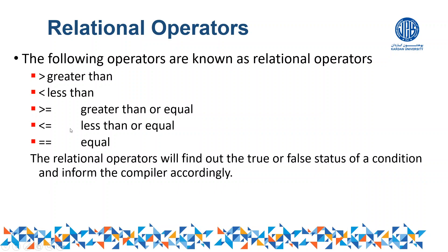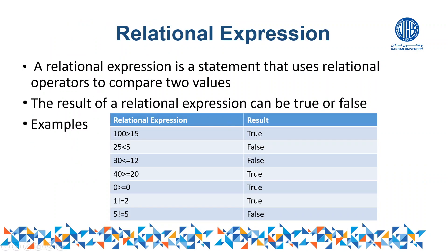A relational expression is a statement that uses a relational operator to compare two values. It can be composed of operands, variables, or constants like 15 or 100. Just as we discussed, a relational expression is a statement that uses relational operators to compare two values. In this expression we use relational operators, so one number is compared with another number. The result of a relational expression can be true or false.